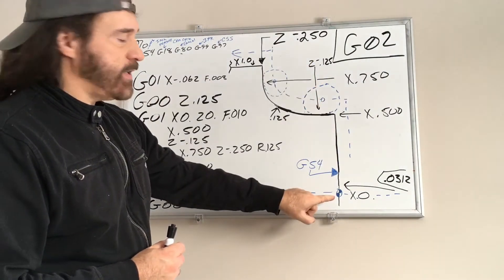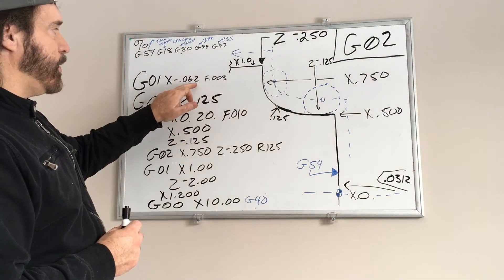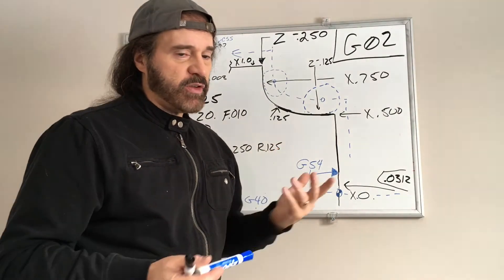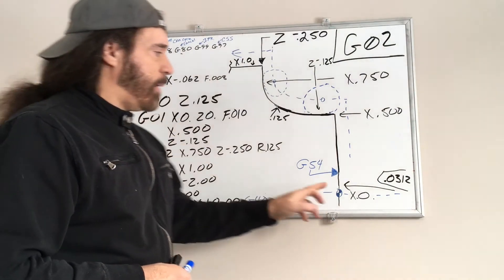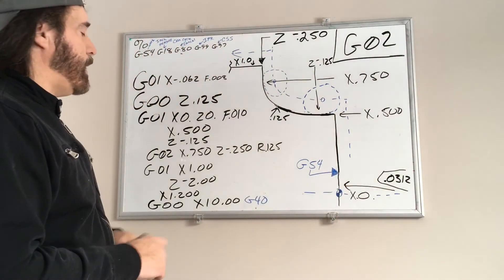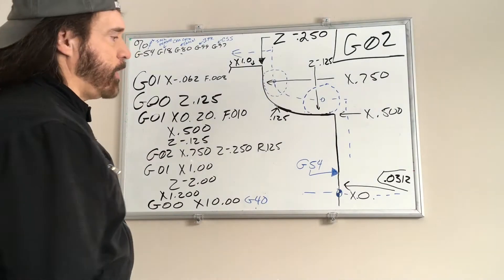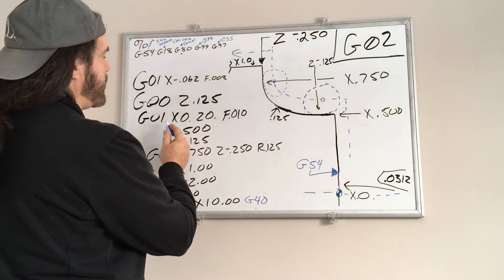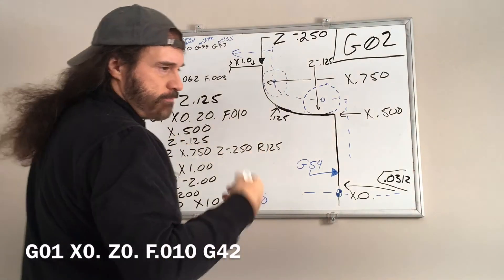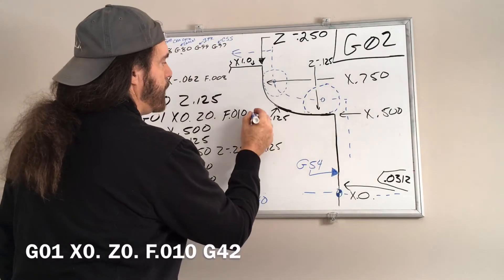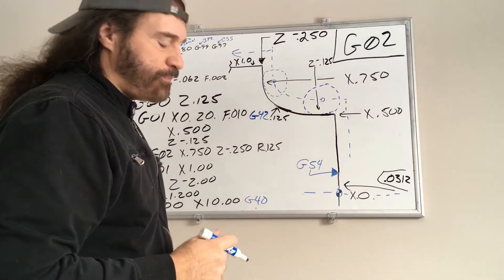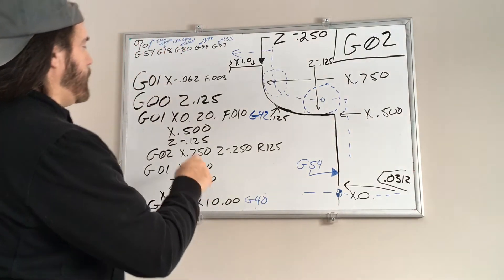So how do you write it in cutter comp? Very simple. We did our feed, facing the part, going past centerline sixty-two thousandths. We're going to rapid point one two five that way. Now we're going to start setting up cutter comp. I'm going to feed it to X zero, Z zero at a feed rate of ten thousandths. So we're going to turn on G42, which is cutter comp, and I'm going to feed up to X point five.